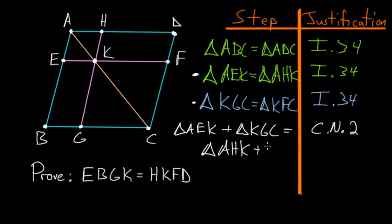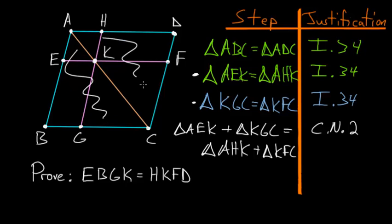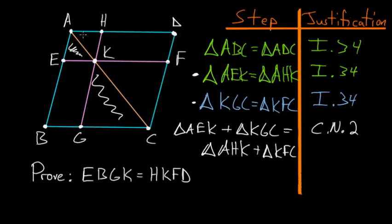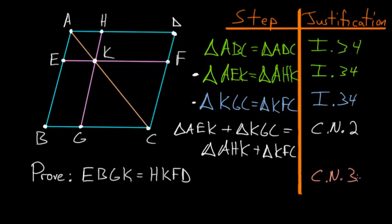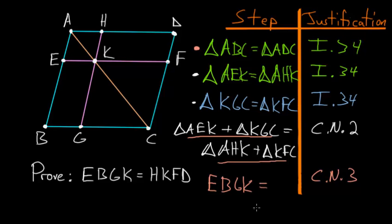Since triangle KGC equals triangle KFC, we substitute to get triangle AEK plus triangle KGC equals triangle AHK plus triangle KFC. Now, since triangle ABC equals triangle ADC, we subtract these smaller triangles from the big ones using Common Notion 3 — subtracting triangles AEK and KGC from triangle ABC, and triangles AHK and KFC from triangle ADC.